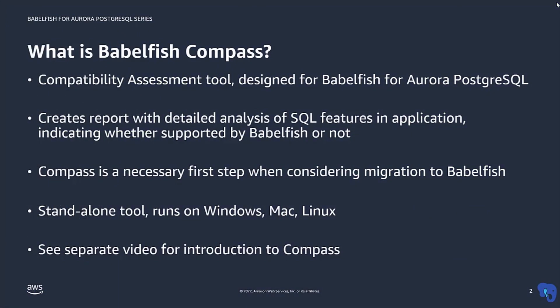Compass is a standalone tool to help determine whether a SQL Server-based application can be migrated to Babelfish for Aurora Postgres. Compass performs a detailed analysis of all SQL features in your application and reports whether they are supported by Babelfish or not. Based on the Compass report, you can determine whether a migration of your application to Babelfish may be feasible. Running Compass is therefore always the first step to take when you are considering a migration.